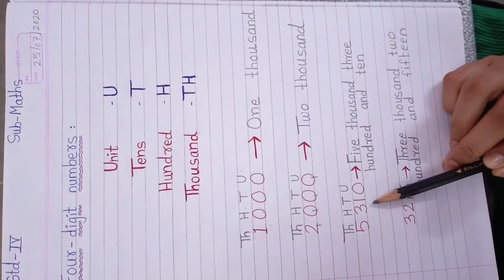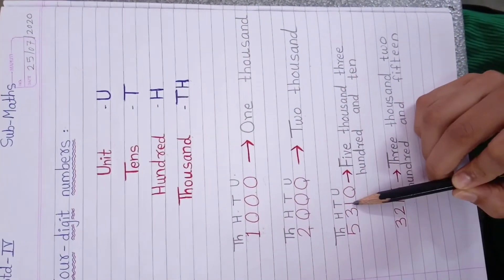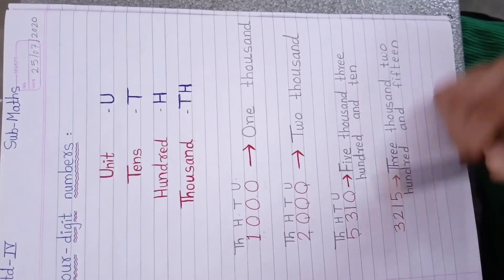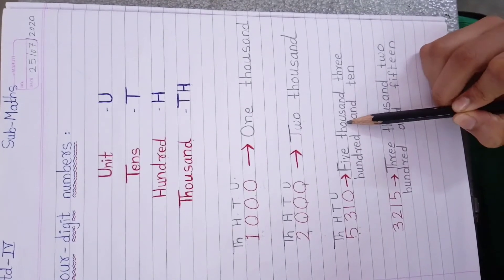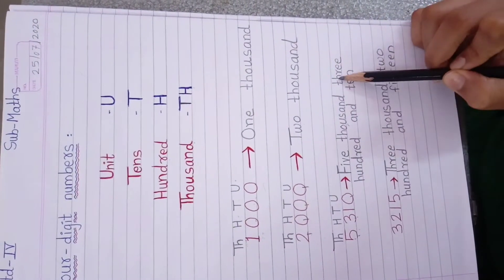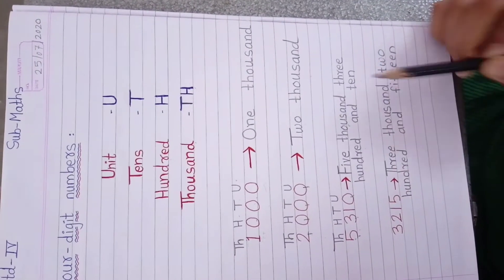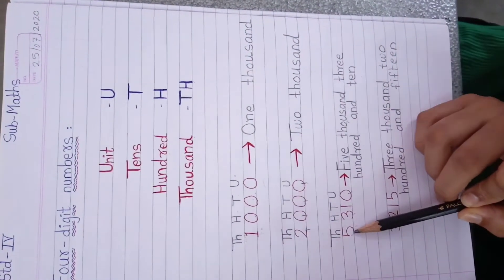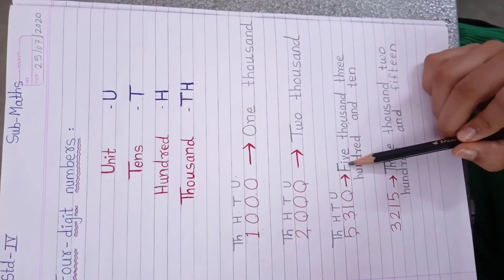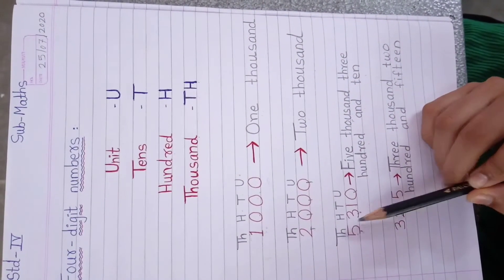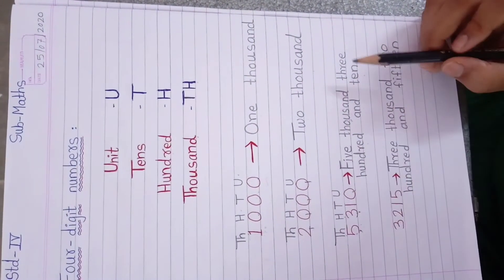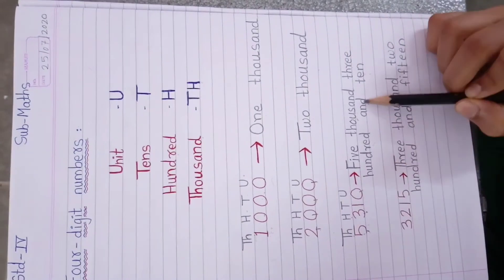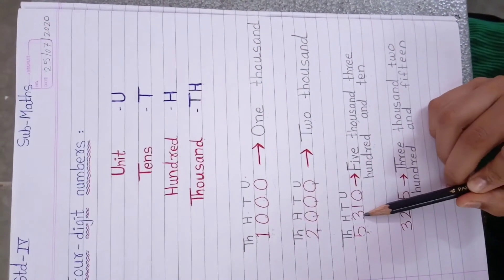Then the next number — here also how many digits? 1, 2, 3 and 4. So how will we read this? 5000. You know why we read it like this? Because 5 is on the 1000 place, that's why we read 5000. Then 3 is on the 100 place, that's why we read 300, and this one is 10. So we read the number as 5310.